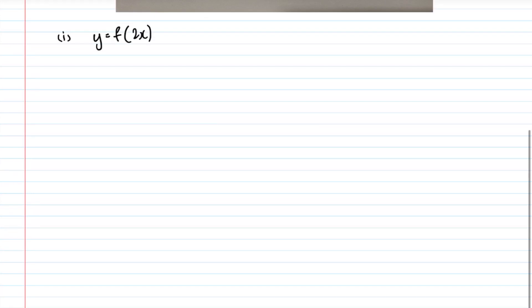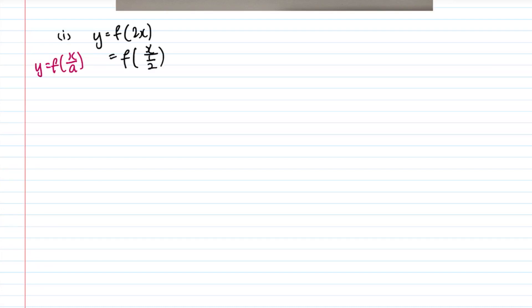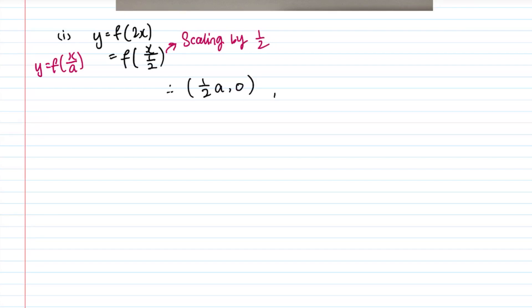Part one gives you the curve y = f(2x). From our knowledge on transformations, for x-transformations involving scaling, it must be in the form y = f(x/a). So we rewrite 2x as x over one-half, meaning we scale by a factor of one-half. Therefore the x-intercept becomes (a/2, 0) and the y-intercept stays at (0, b) since nothing was done to the y part.